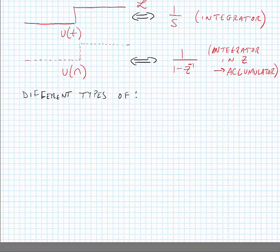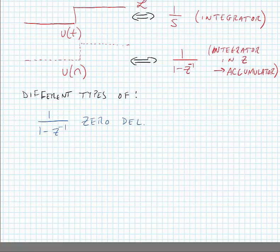We have different types of integrators that we're going to look at. So one type of integrator is the one that we just looked at, one over one minus z to the minus one. And this is a zero-delay integrator. We can add delay to the integrator by changing the numerator. So for instance, we can add a half delay by making the numerator z to the minus one-half, keeping the denominator the same. So this is what we would call a half-delay integrator.